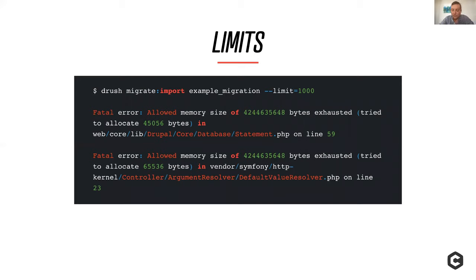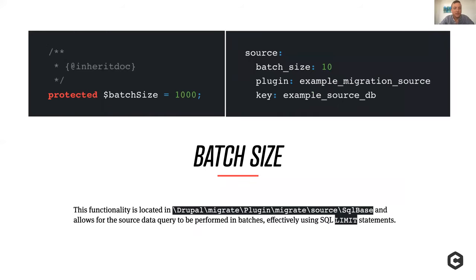The limit flag is another great tool — when writing a migration you might only need to do one or two to prove out your theory and see if the migration is going to work. However, it should be known that this does not actually apply a limit to your source query. If you're using SQL there is no limit on that query — it's still grabbing all those rows and still calling prepareRow on every single source record. So if you have subsequent queries in prepareRow like Claire was discussing, those are all still going to run even if you have limit set to one.